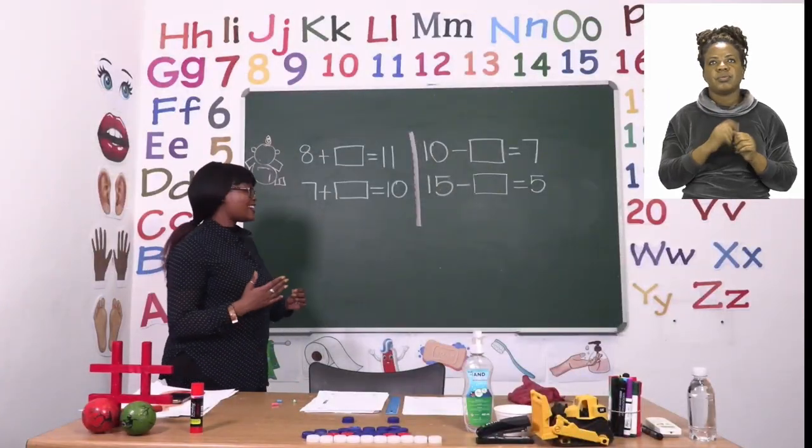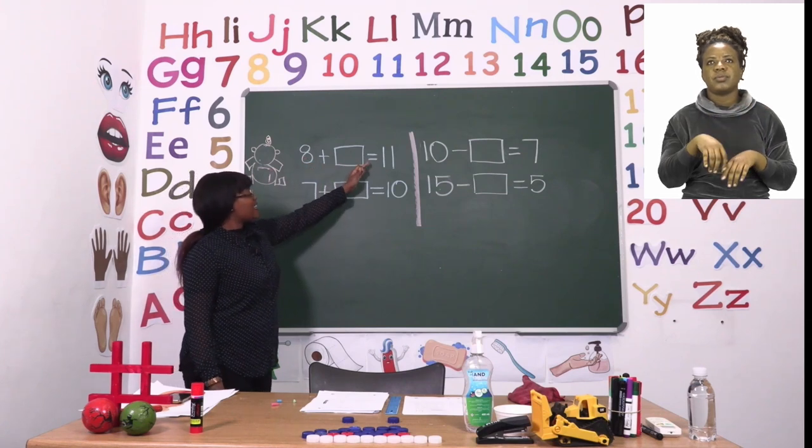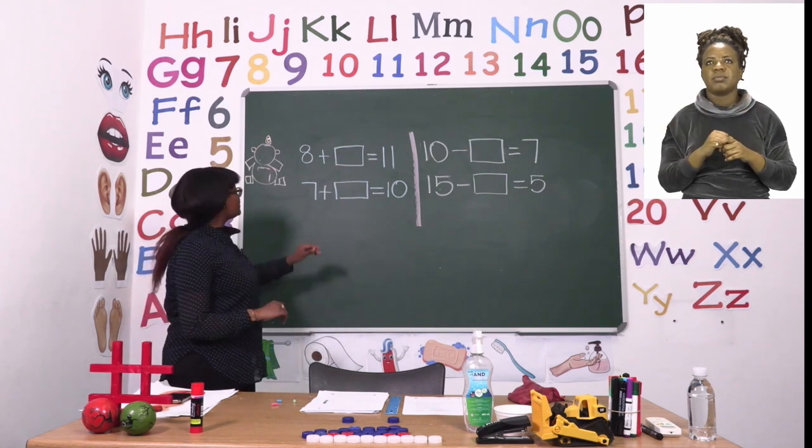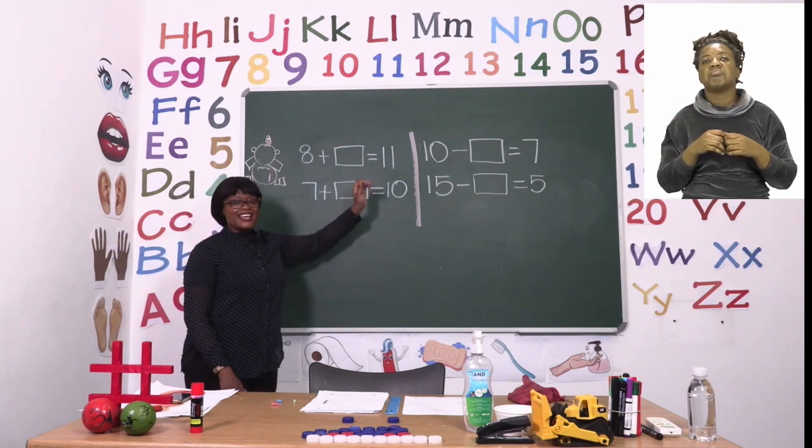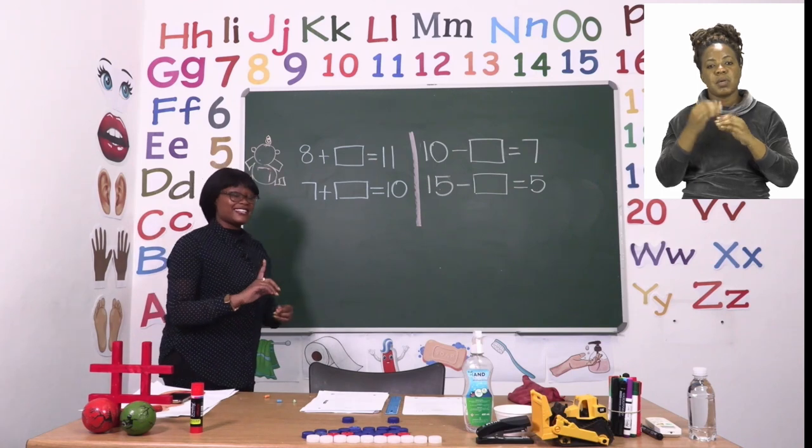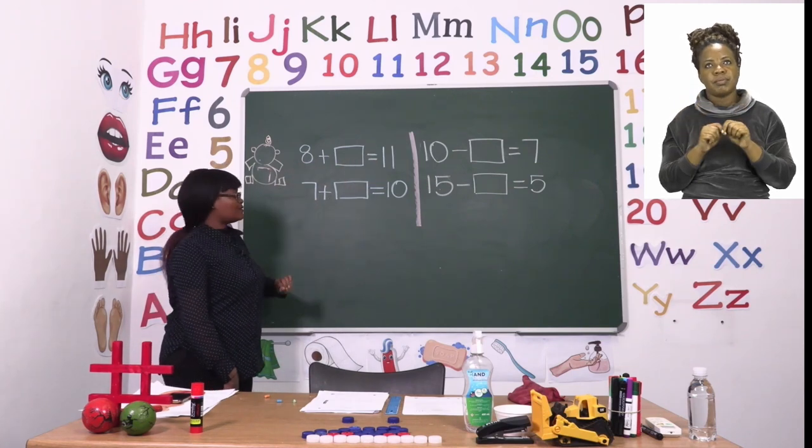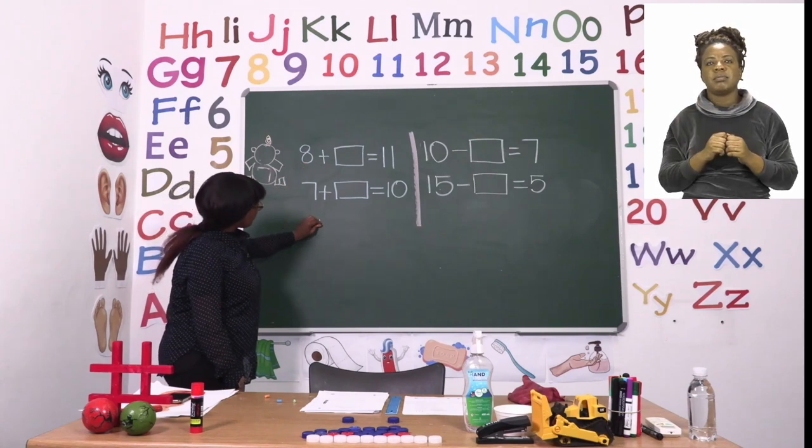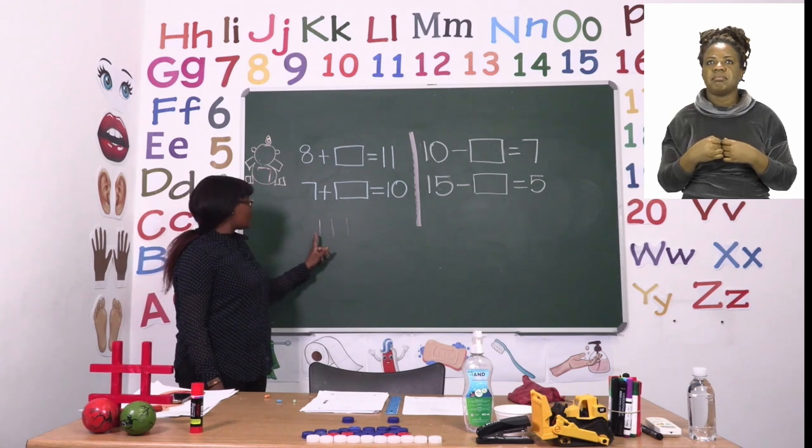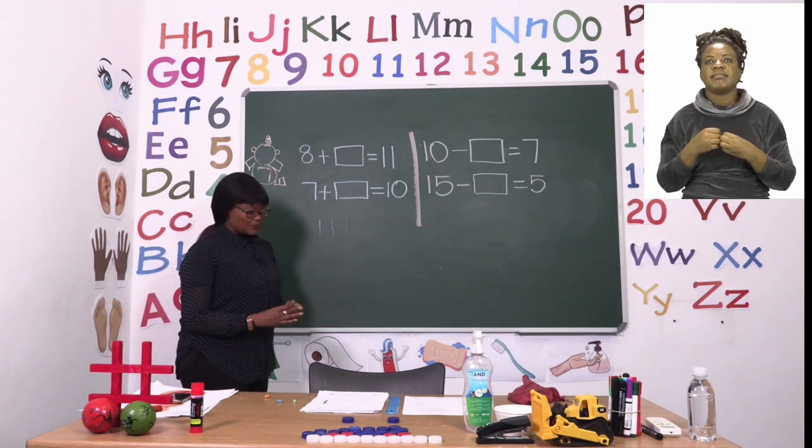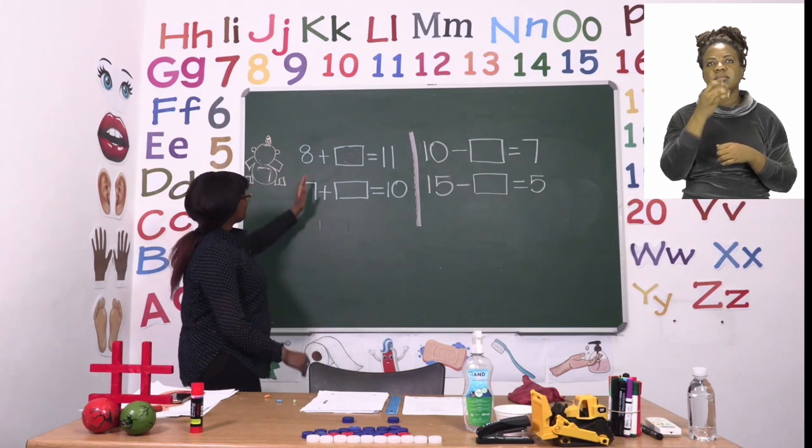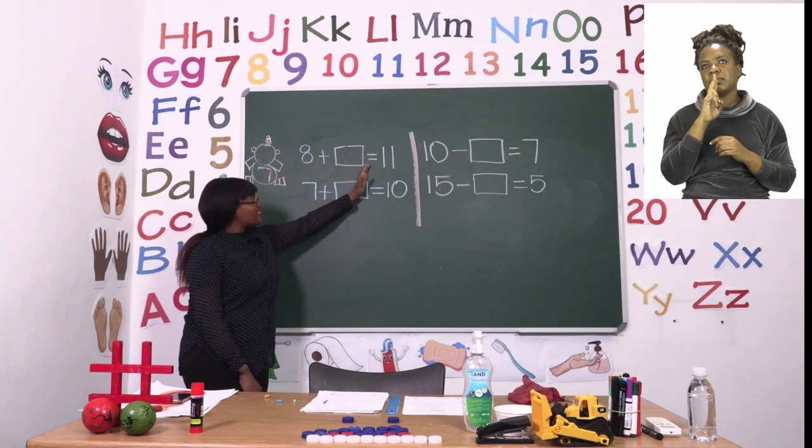Now the first one we're going to do is adding. It says 8 plus box equals 11. So how are we going to find this one? Well there's a simple trick. We are going to count from 8 to 11. The number that we have in between them is the one that is supposed to be in the box. So we're going to make sticks. We're going to start at 8 and then we're going to stop at 11. 8 is already there, so we're saying 9, 10, 11. So that means that our answer is 1, 2, 3. We are now going to write 3 in the box. Now our sum is complete. It says 8 plus 3 equals 11.